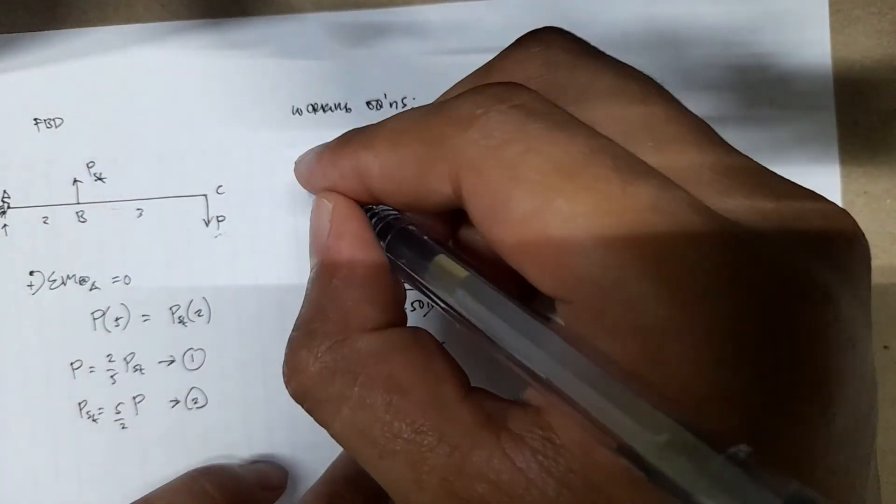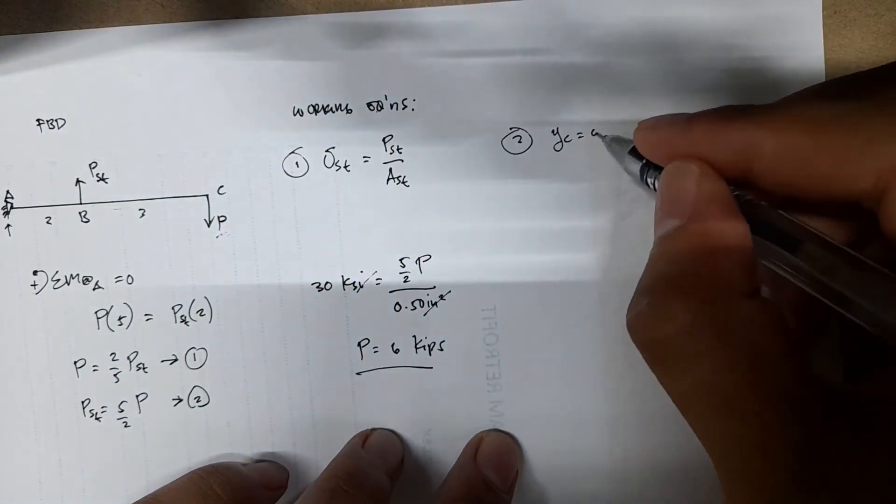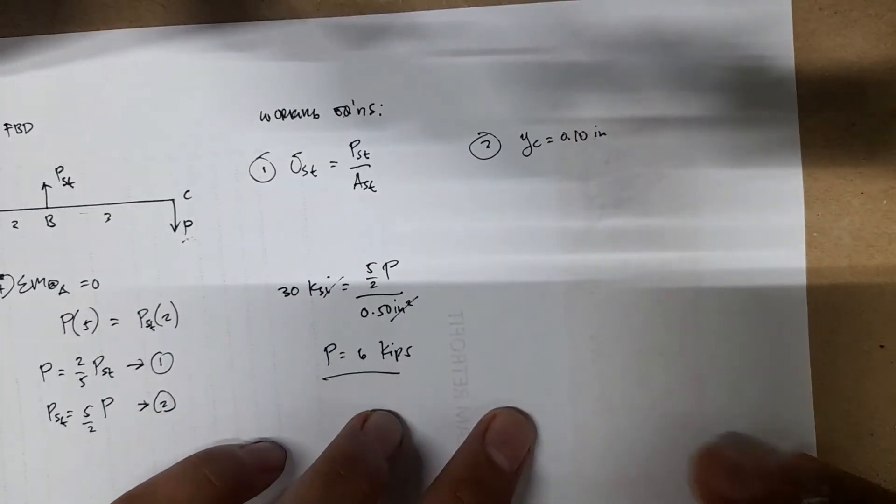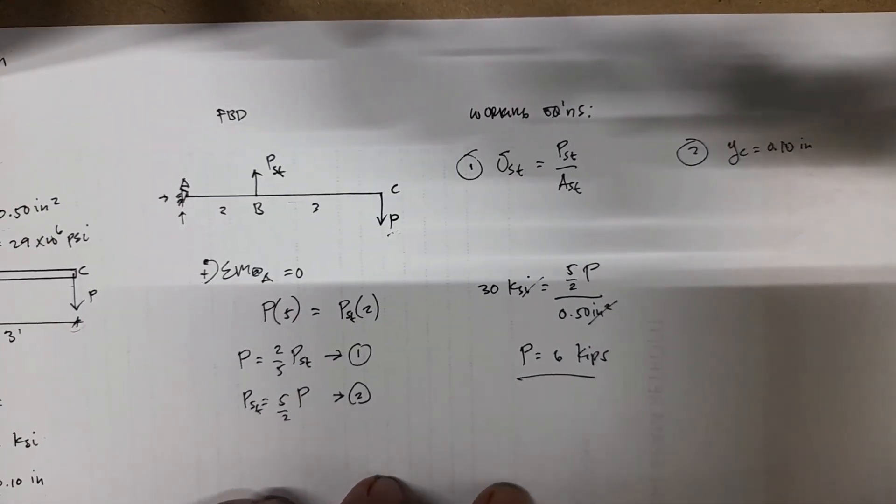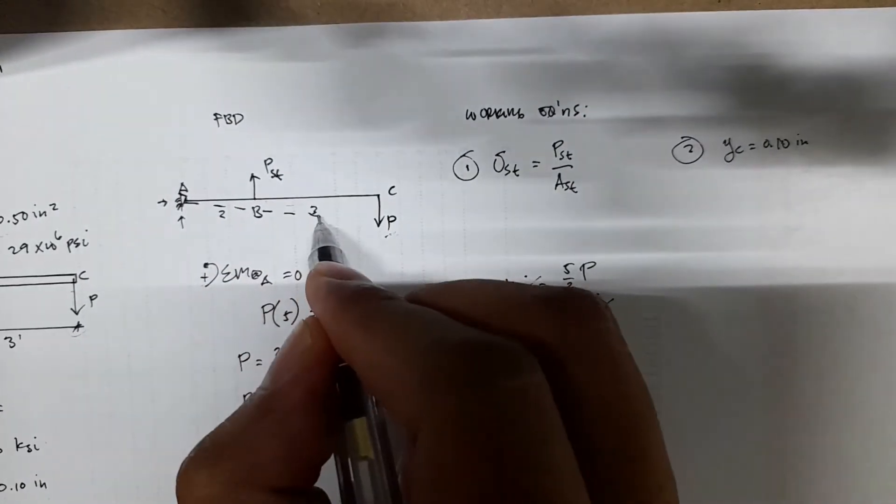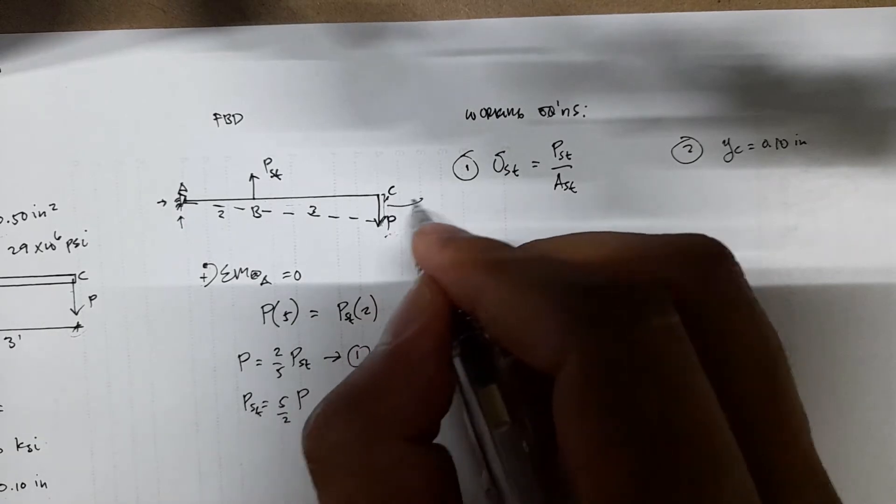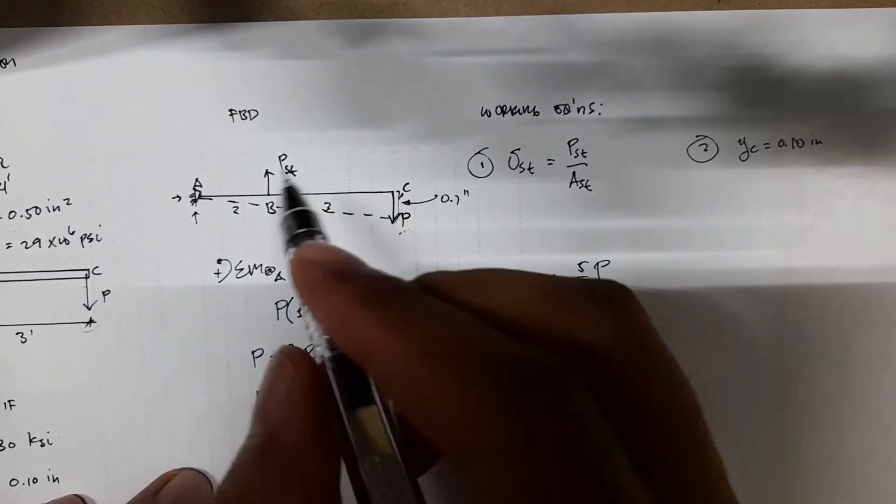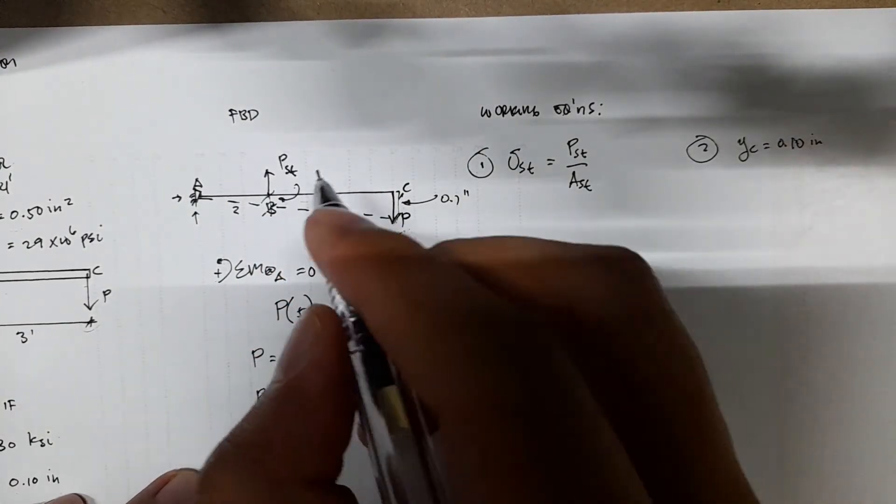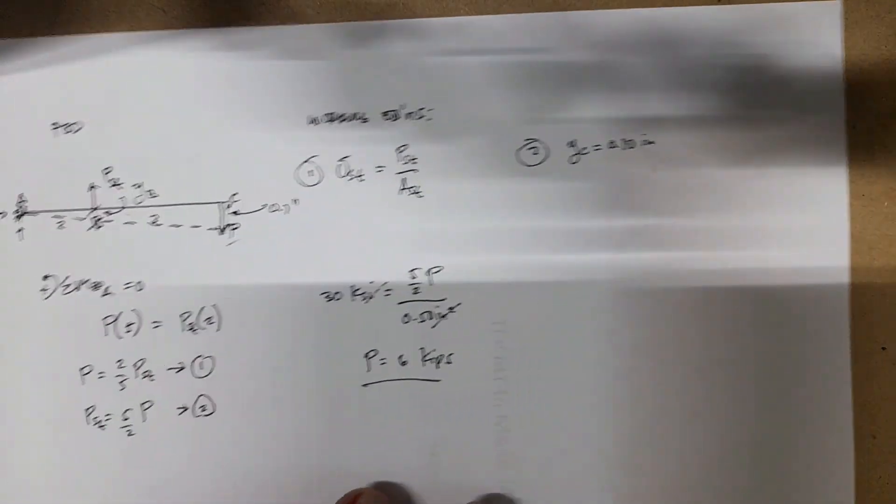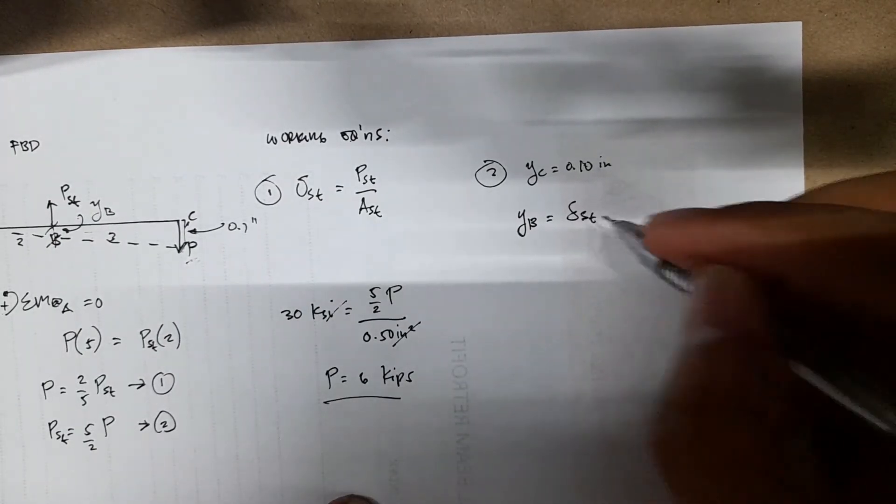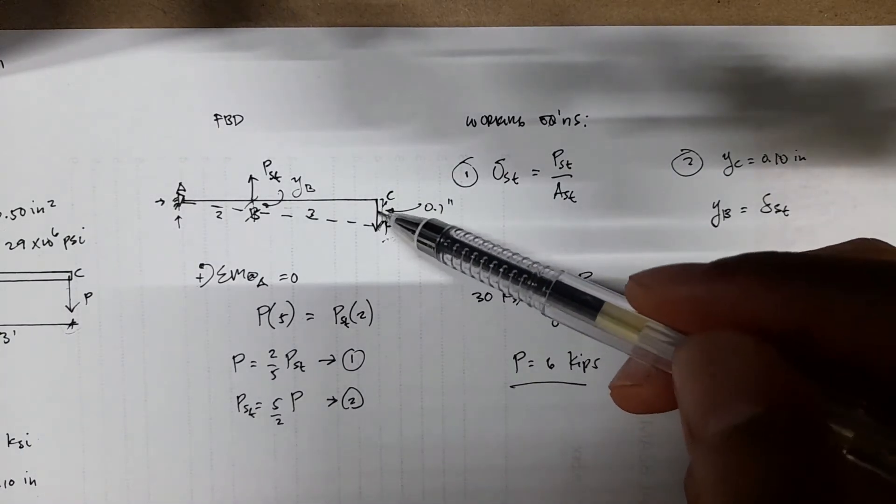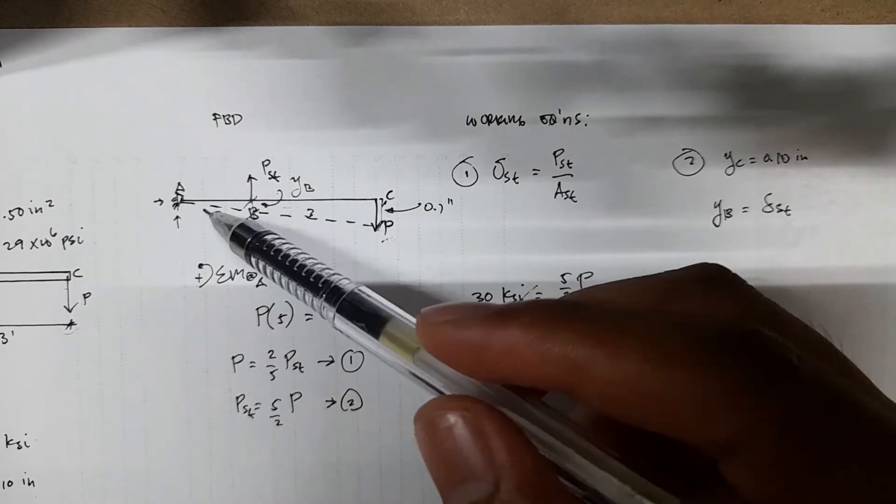The second condition is YC equals 0.1 inch. We're trying to limit the movement of the rigid bar ABC. This is the projected movement of 0.1 inches. We also have movement at point B, which we denote as YB. YB is just the deformation of the steel. Because as you apply force P and the bar is rigid, as stated earlier, the bar will not deform.